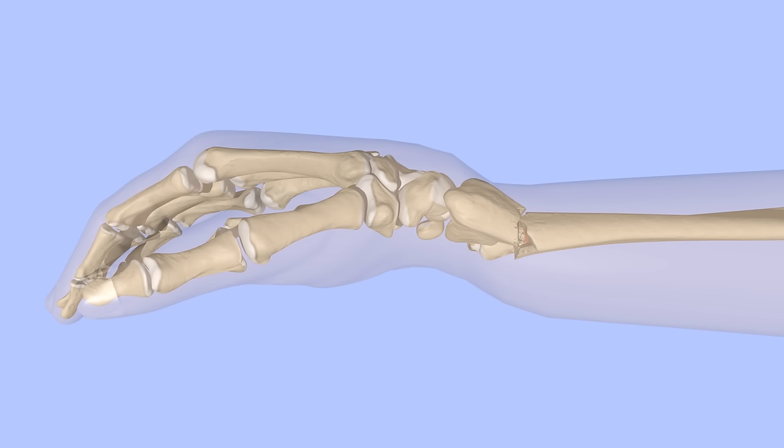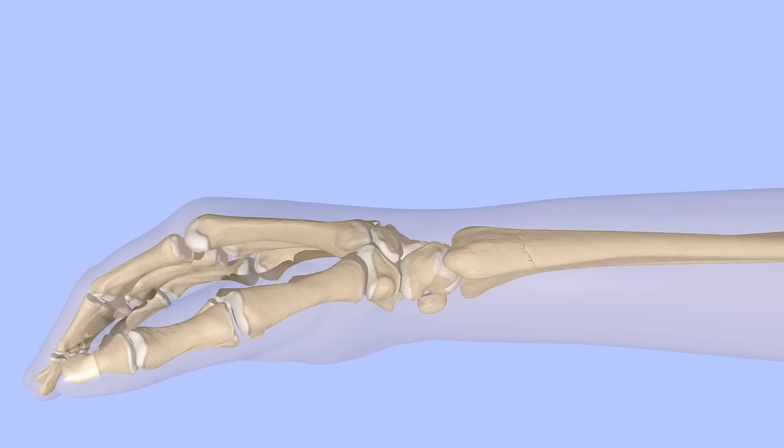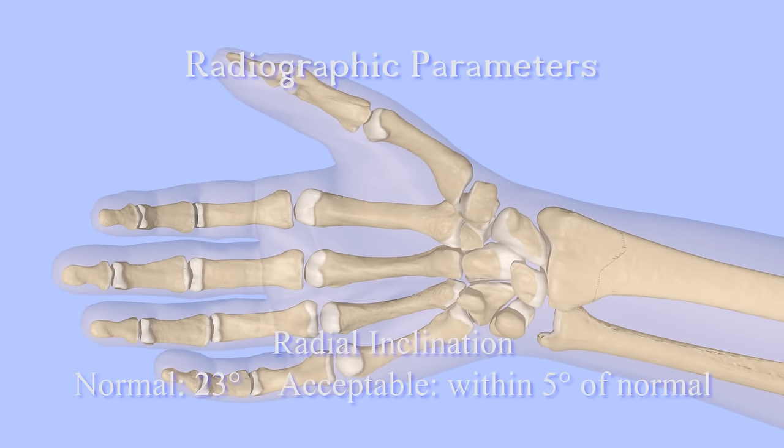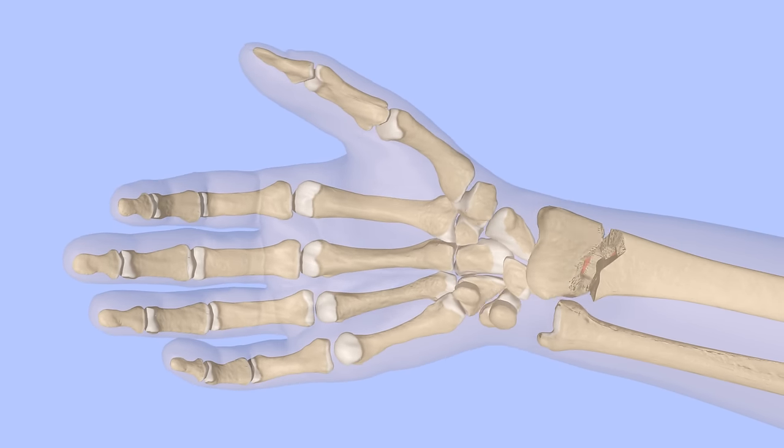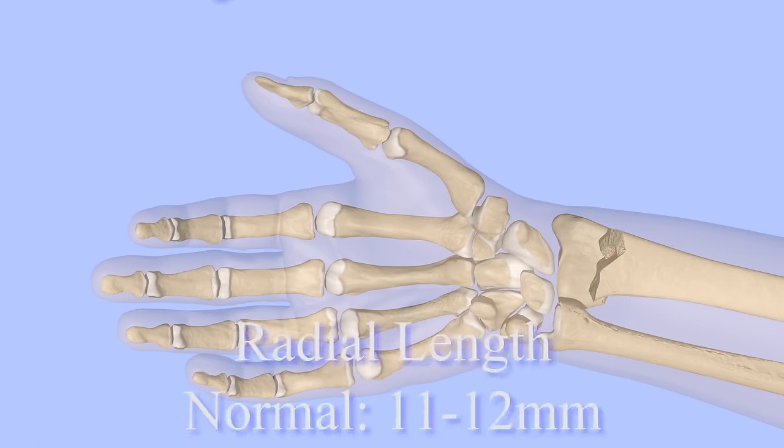Dorsal angulation is very common. If the fragment is tilted too far to the side, there may be loss of radial inclination. Sometimes the fracture is shortened, resulting in shortening of the arm.